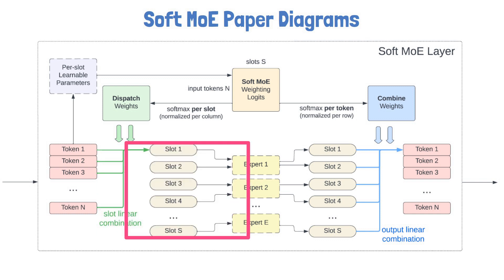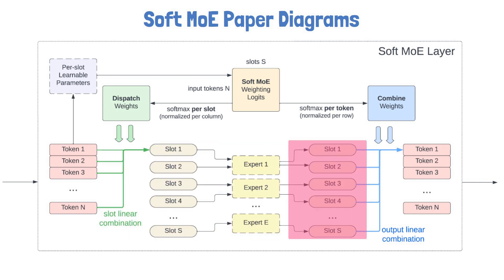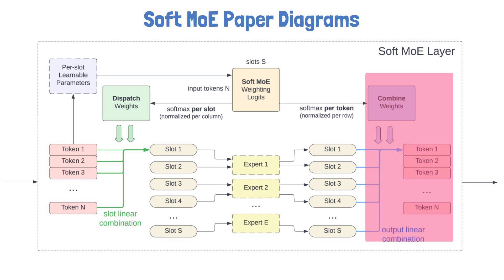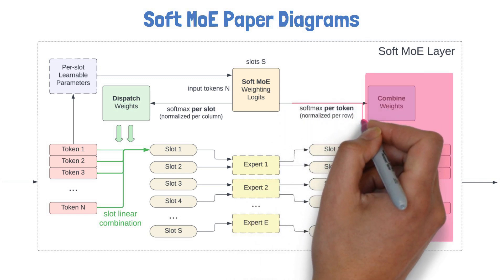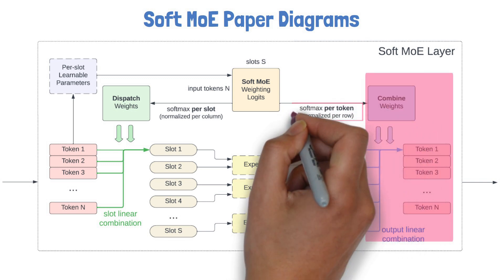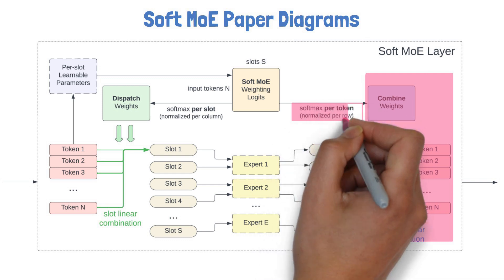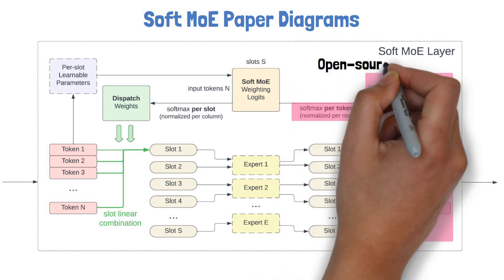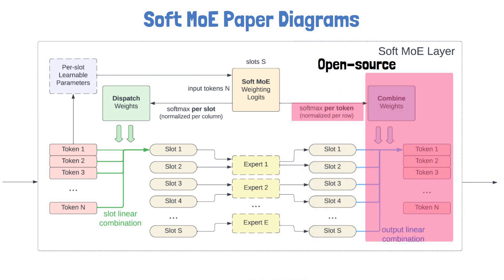Next, the experts yield the results for each slot as we saw before. Then we combine the expert results using another softmax over the original logits, this time by token, so for each token we know how important it was for each slot, and so we consider the expert slot result for each token appropriately. The code for this Soft MOE layer is available and you can find the link in the video description.